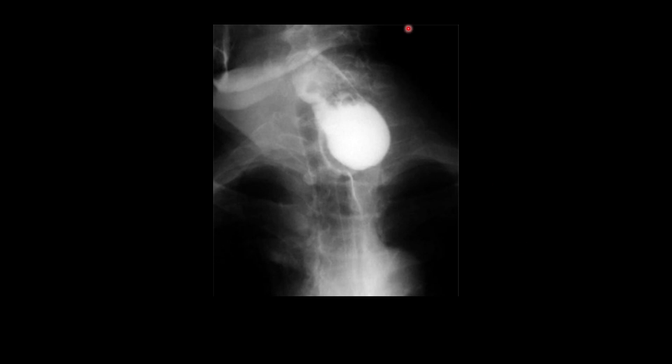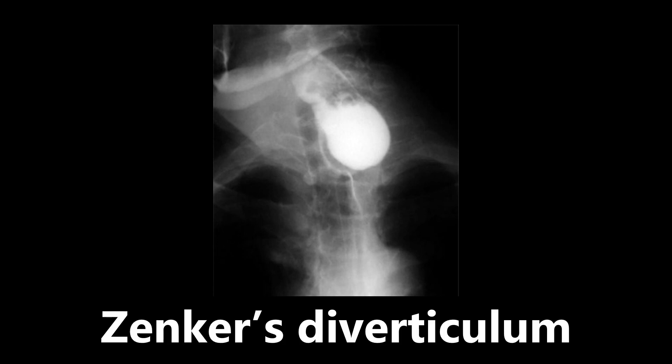Next we have an x-ray with a very bright region — this is a barium swallow showing a Zenker's diverticulum. This is an outpouching of the esophagus typically caused by constriction or tightening of the cricopharyngeus muscle. The increased pressure leads to an outpouching where food and fluid can get caught, forming a Zenker's diverticulum visible on barium swallow x-ray.